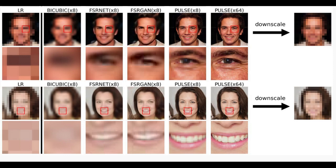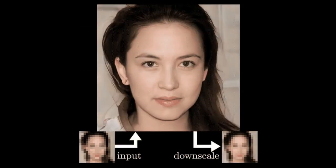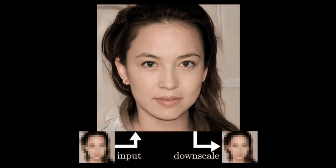The Duke team came up with a different approach. Instead of taking a low-resolution image and slowly adding new detail, the system scours AI-generated examples of high-resolution faces, searching for ones that look as much as possible like the input image when shrunk down to the same size.